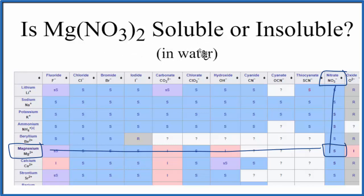They would dissociate into the ions based on the solubility rules and on our chart here. This is Dr. B, answering the question whether Mg(NO3)2 is soluble or insoluble in water. It is soluble. Thanks for watching.